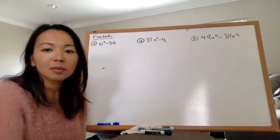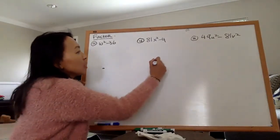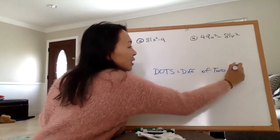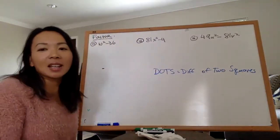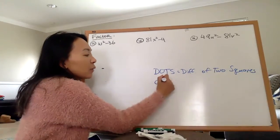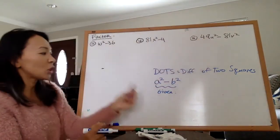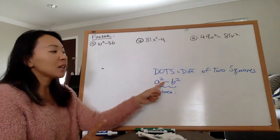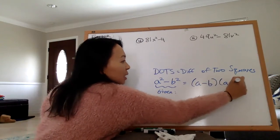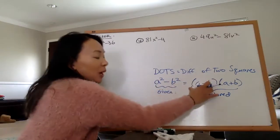Let's talk about DOTS first. DOTS stands for Difference of Two Squares. If you're given two terms in the form where something is being squared minus something else is being squared — that is, a² minus b² — then when you factor it, it equals (a − b)(a + b). This is the factored version of the polynomial.